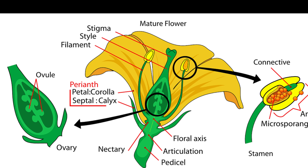Additional notes. 1. Receptacle — the thickened part of the stem from which the flower parts grow. 2. Complete flower — a flower containing all four whorls: sepals, petals, stamens, and pistil.